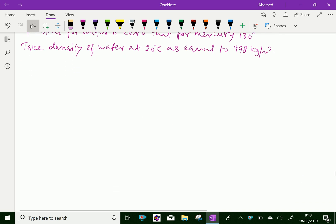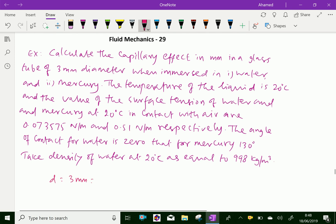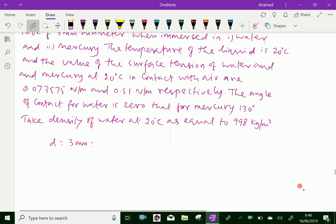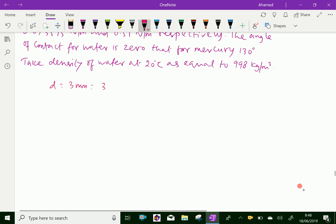Now, let us solve this problem. Here, the given things: D, that is diameter of the glass tube, equal 3 mm, which is converted in meter is 3 into 10 power minus 3 meter.